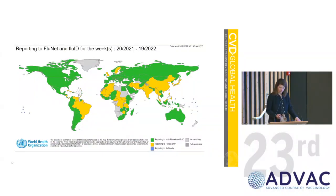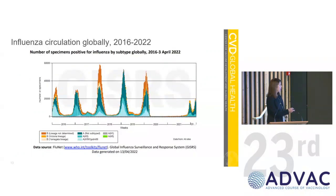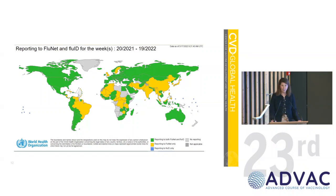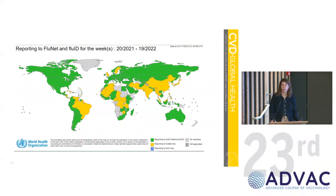Then we saw just one pediatric death in 2020 to 2021. Unfortunately, we're seeing pediatric deaths again this year — about 150 reported. Part of the problem is this is the WHO surveillance system. Who does influenza surveillance and who reports it? In the green are countries that report to two different surveillance systems, in yellow there's some reporting, and in gray there's really no reporting at all.